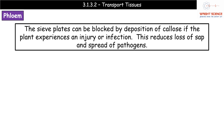If a plant experiences damage or infection, it's important to minimize loss of sap from the phloem and reduce the spread of pathogens through the vascular tissue. This is achieved by depositing a substance called callose. When the plant experiences injury or infection, callose is deposited into the sieve plates, sealing them up. So if there's damage to the tube, callose is deposited across the sieve plate to seal off that particular tube.